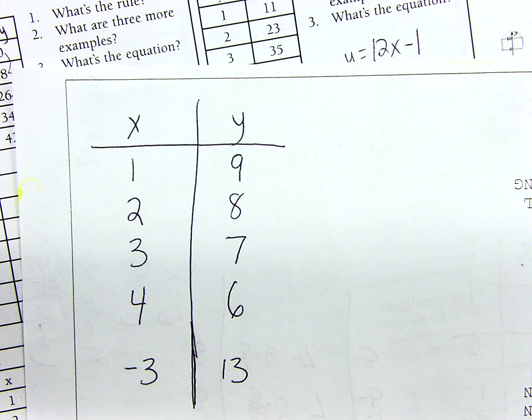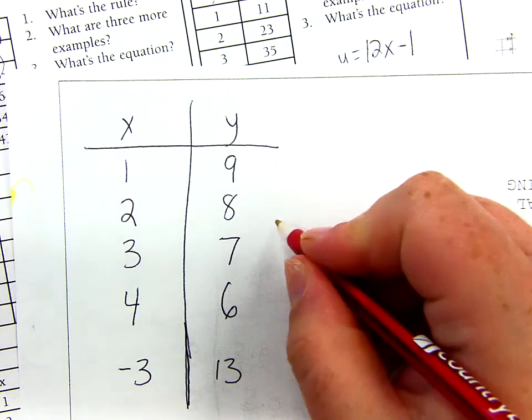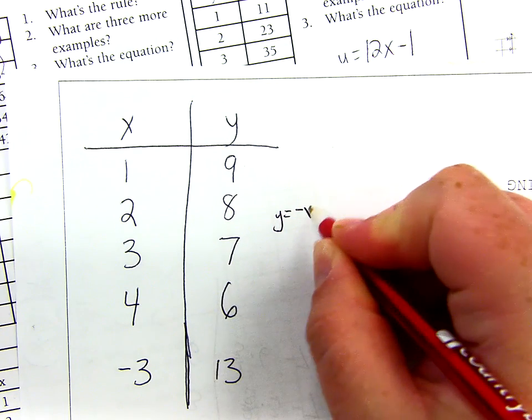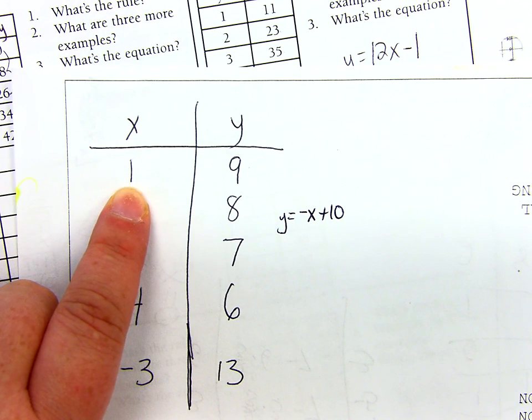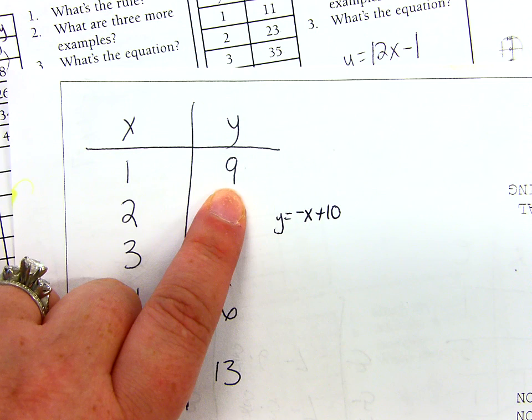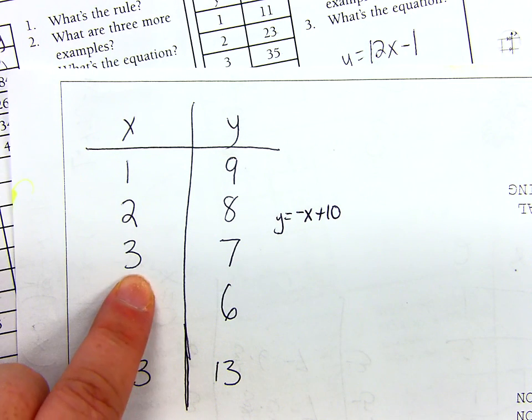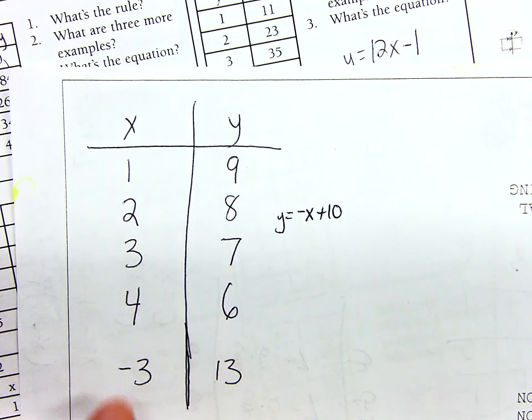What did you say? I think it was right, whatever I heard. Negative 1X plus 10, she says. Let's see if it works. Negative X plus 10. So it would be negative 1 plus 10 does get me 9. Let's try 3. Negative 3 plus 10 does get me 7. Negative 4 plus 10 gets me 6. How about this one? Yeah. Negative 3 is 3. 3 plus 10 is 13. Yes.